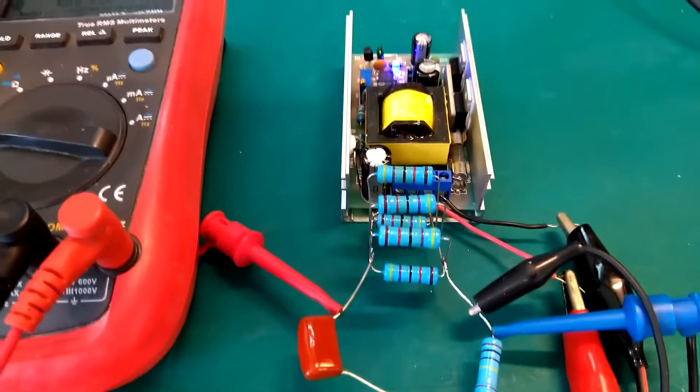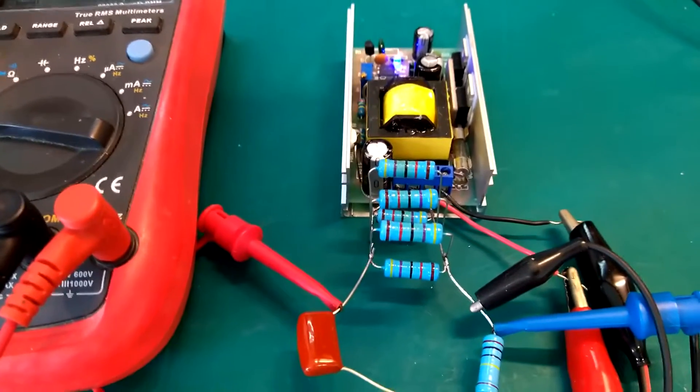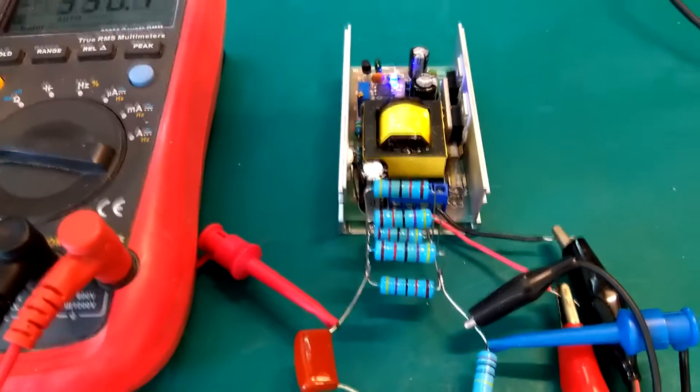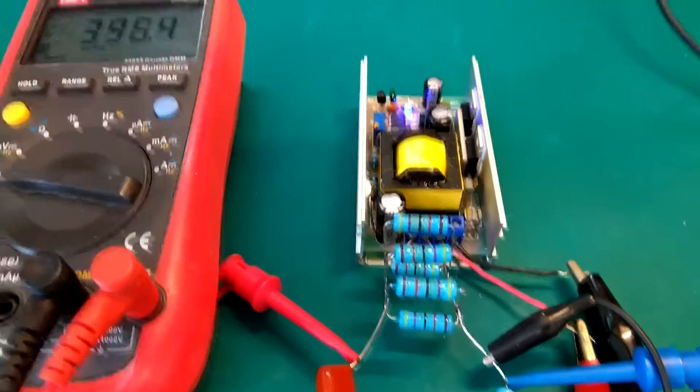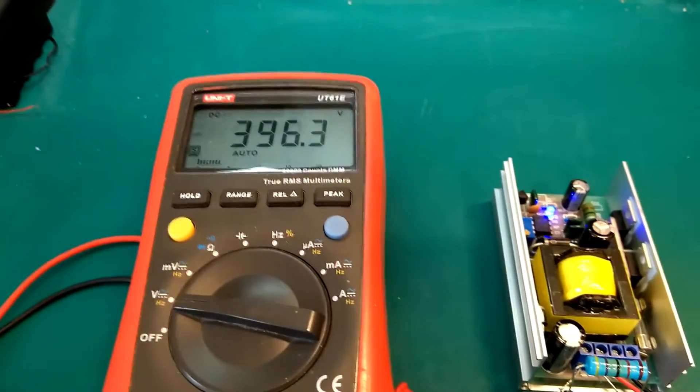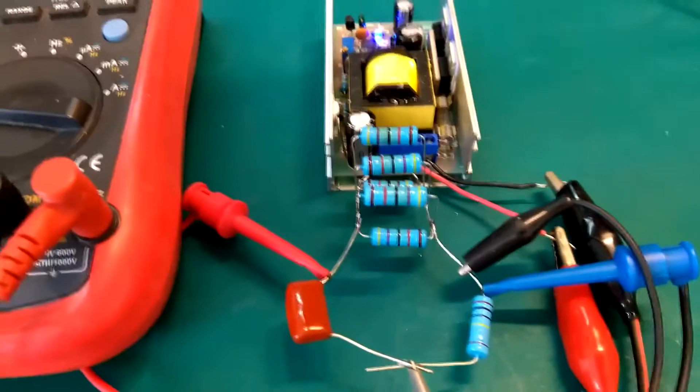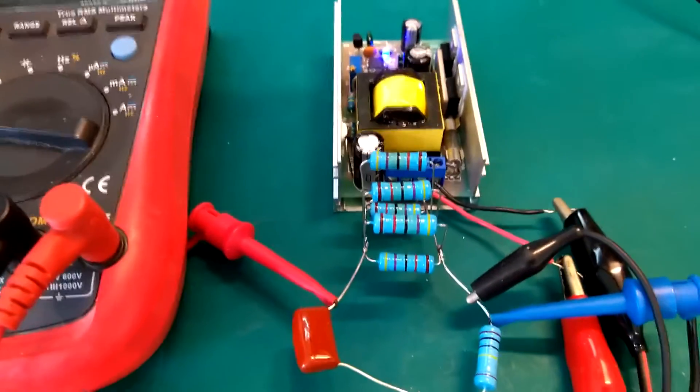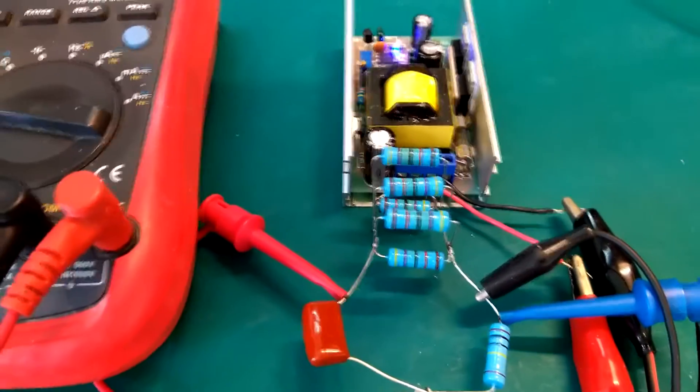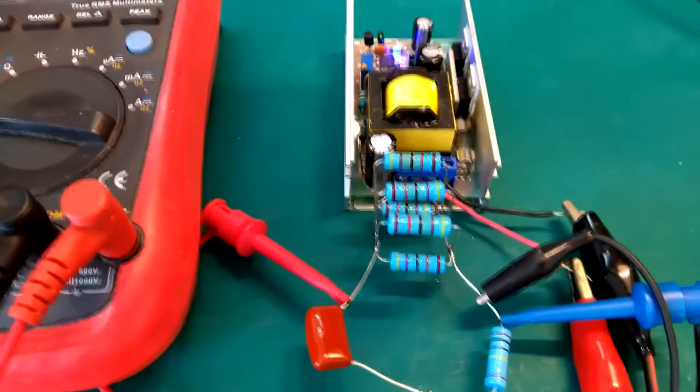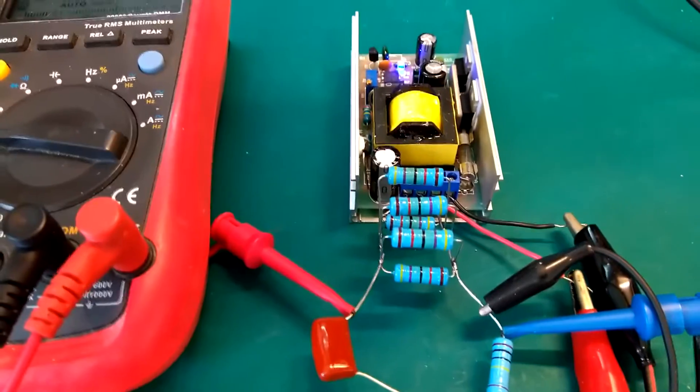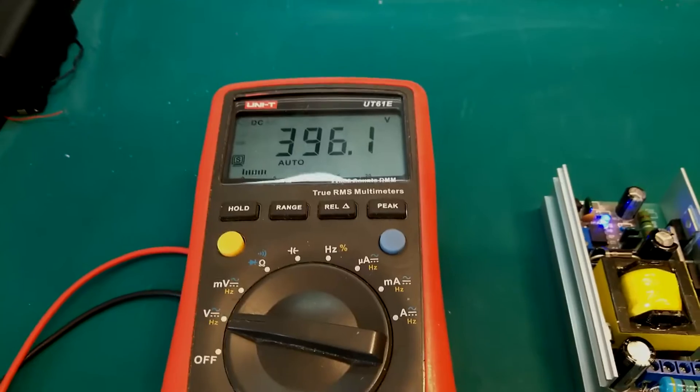So these are 3 watt resistors and it's a little bit marginal because they give us a maximum dissipation of 15 watt, but actually at around 400 volts we are putting like 16, 17 watts into them. It shouldn't be too bad, they will get very very hot though. Does seem like the voltage is perhaps drifting a little bit.